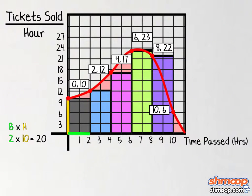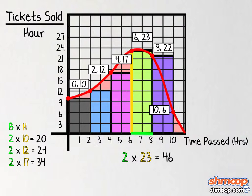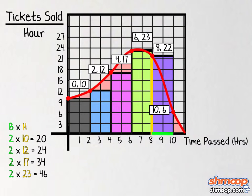For the second interval, the height is twelve, so the area of the rectangle is two times twelve, or twenty-four. For the third interval, the height is seventeen, so the area is two times seventeen, or thirty-four. The fourth interval has height twenty-three, so the area is two times twenty-three, or forty-six. The last interval has height twenty-two, so the area is two times twenty-two, or forty-four.